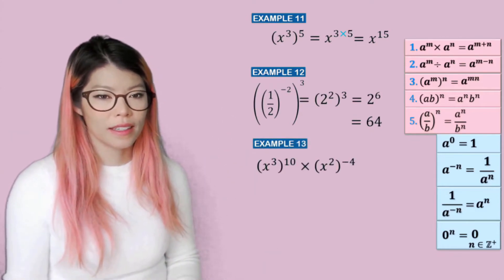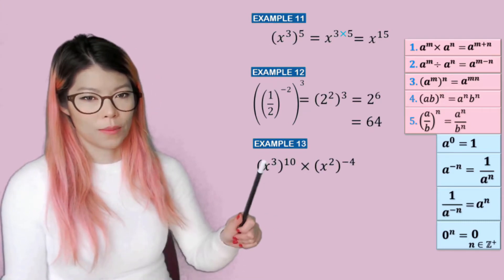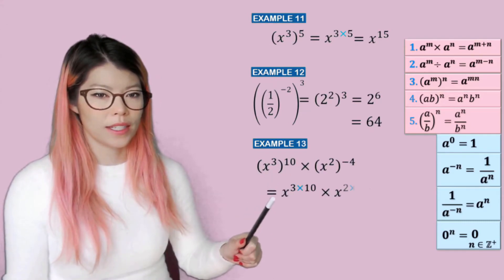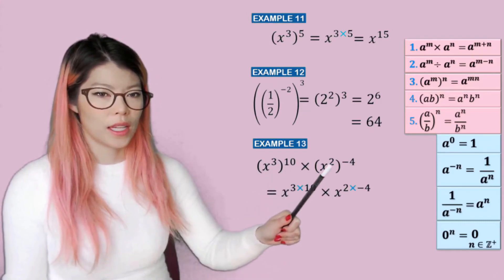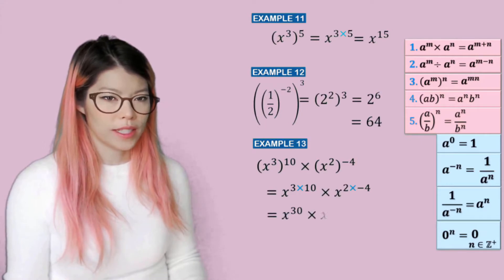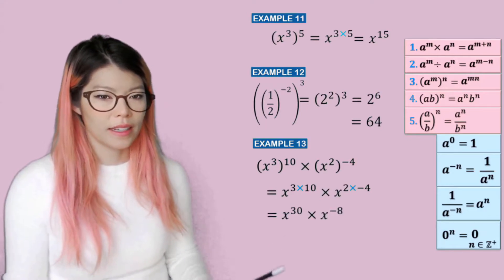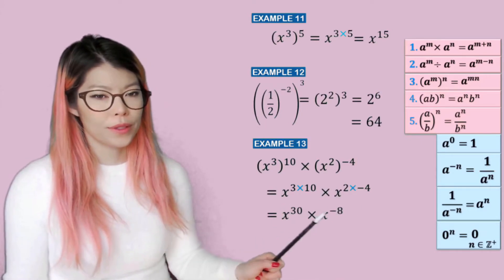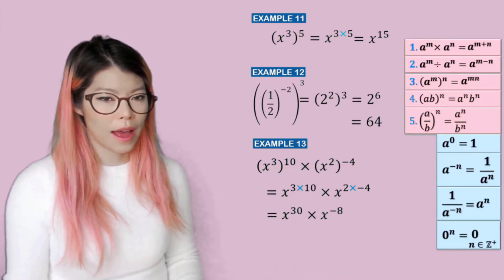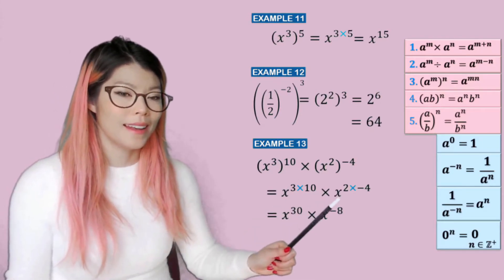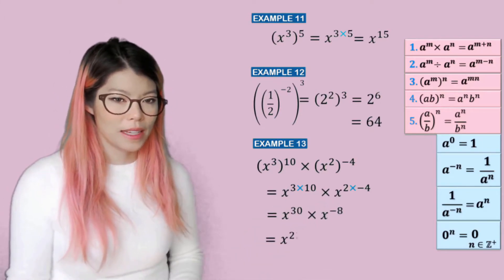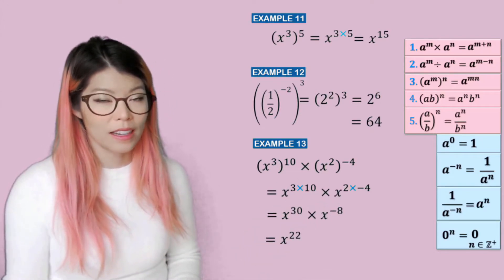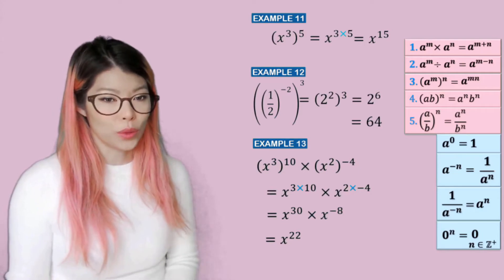Example thirteen: let's expand the brackets. So three times ten is 30, and two times negative four is negative eight. Then when you multiply, what do you do to the powers? You add them. So 30 plus negative eight becomes 30 minus eight, which is 22.